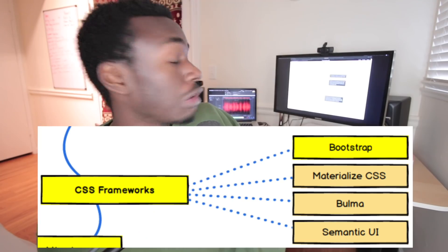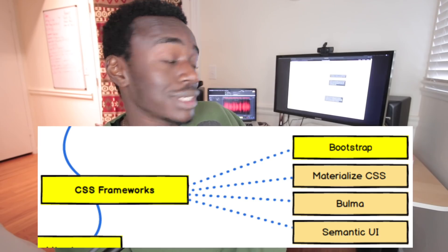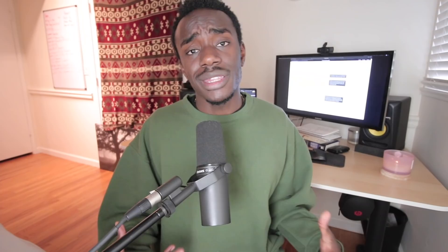CSS frameworks come in handy, especially if you hate designing things. There's Bootstrap, Materialize CSS, Bulma, and Semantic UI. Basically, if you want to make things look pretty, someone else has already done the job. Instead of spending an hour trying to make a button look pretty, go to Bootstrap's website, find a button design you like, integrate it into your code, and boom — it's done.